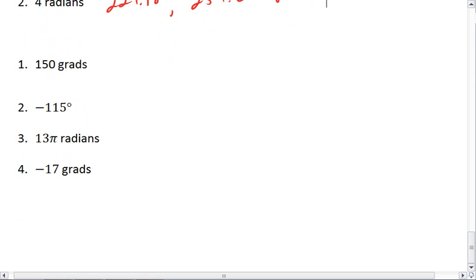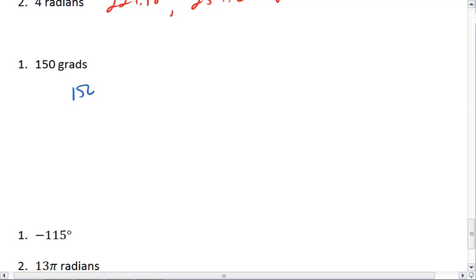Okay. Next, I have grads. If I have 150 grads, that means I have 150 four-hundredths of a circle, which is, I already know, to be three-eighths.